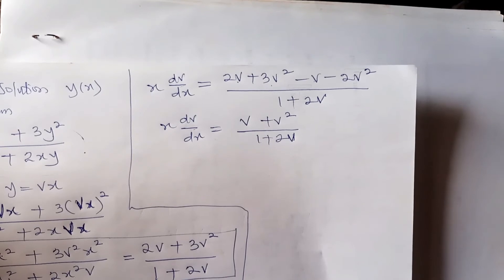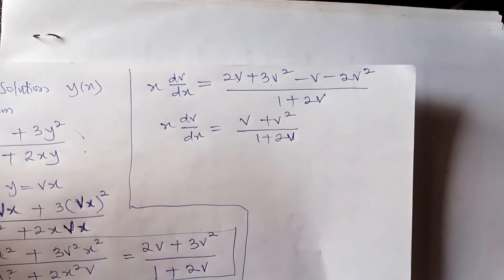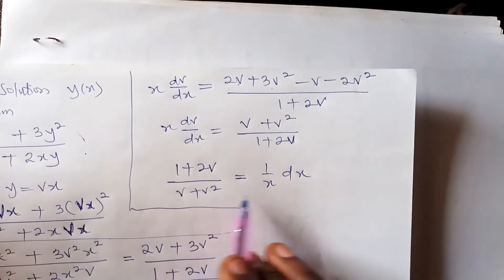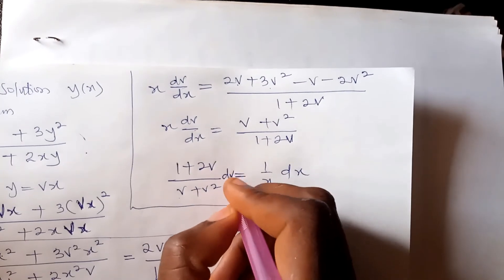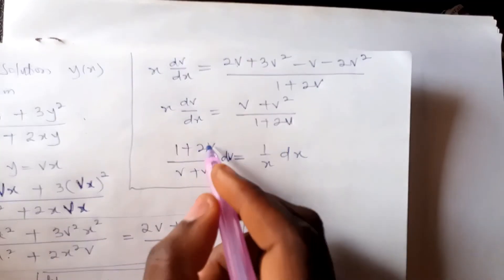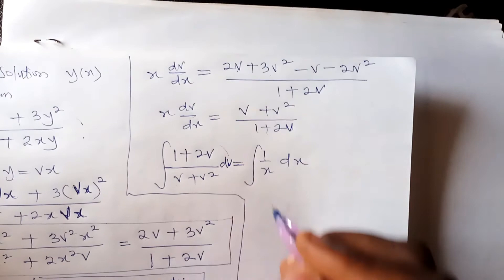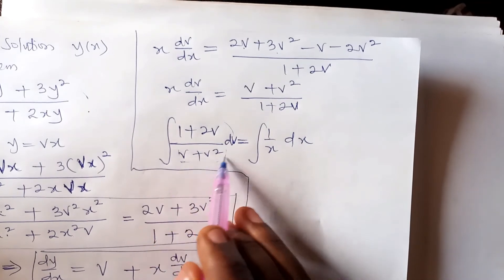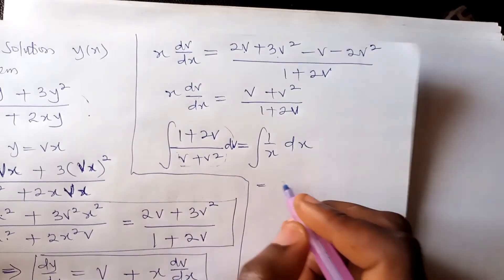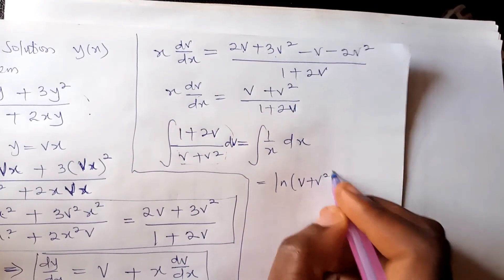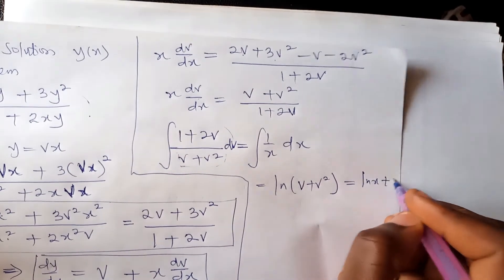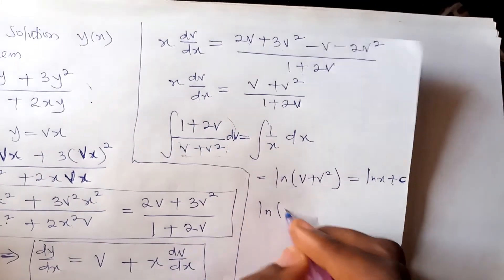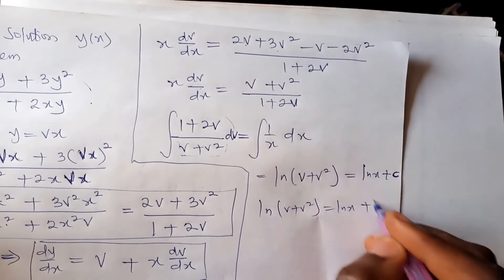Separating variables of v and x, we group all v terms on one side and dx/x on the other. Looking at the integral of the v side: if we differentiate the denominator (v + v²), we get 1 + 2v, which matches the numerator. So the integral is ln(v + v²), and integrating 1/x gives ln(x) plus a constant, written as ln(a).